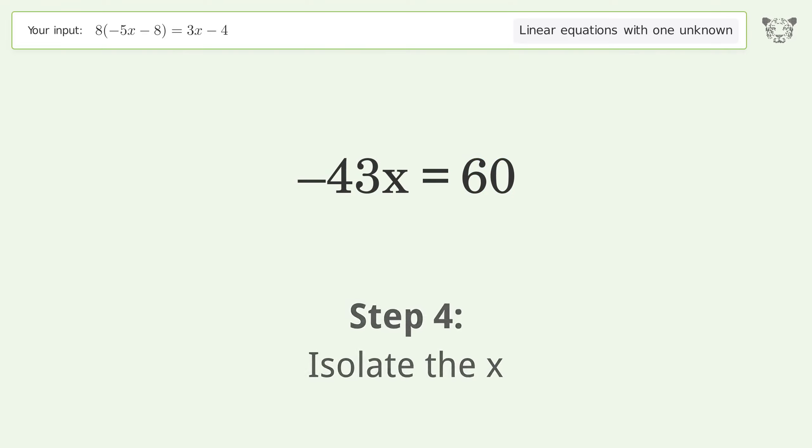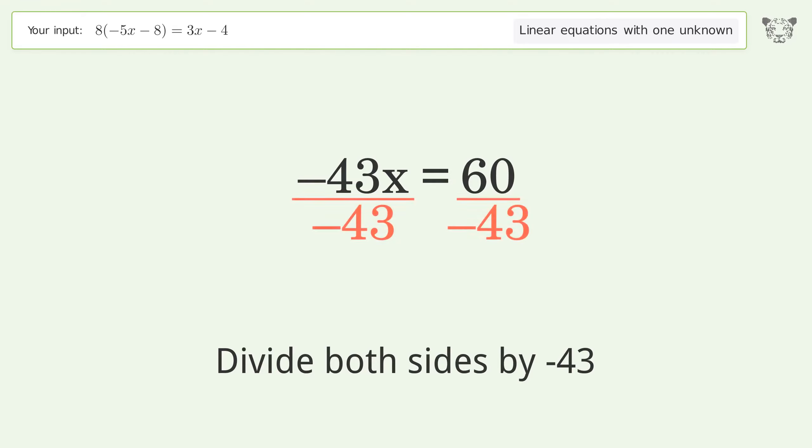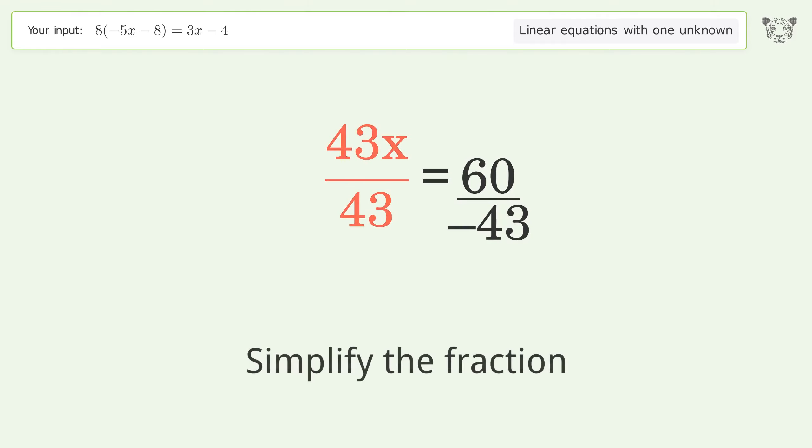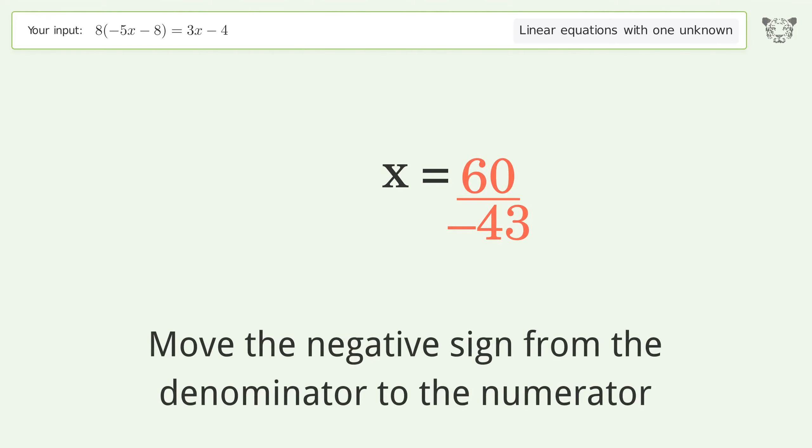Isolate the x. Divide both sides by negative 43. Cancel out the negatives. Simplify the fraction. Move the negative sign from the denominator to the numerator.